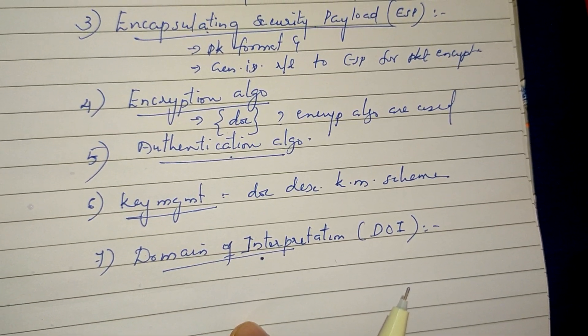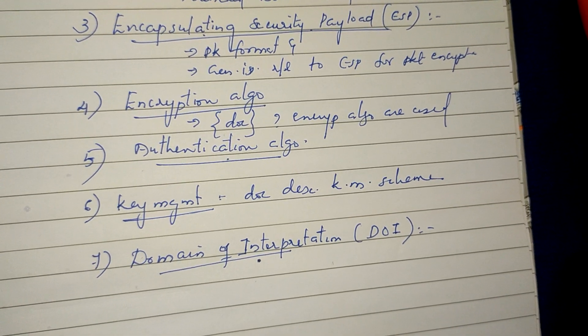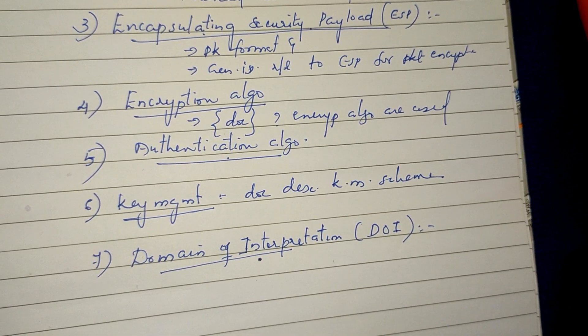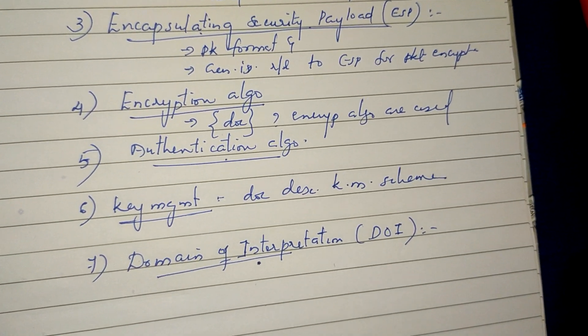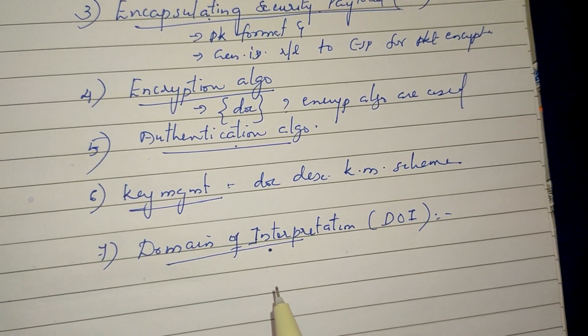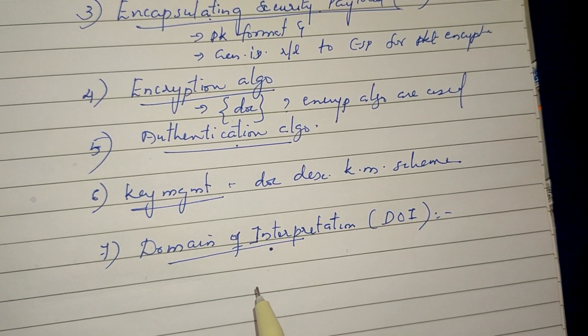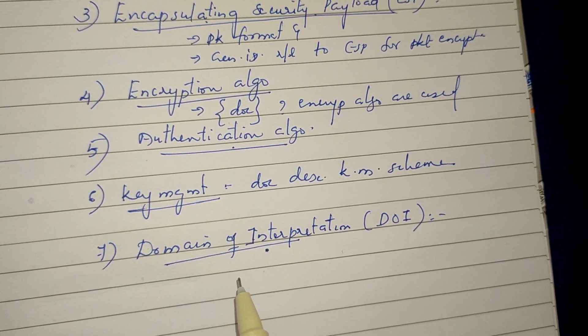The Domain of Interpretation contains identifiers for the encryption approach and authentication algorithms — essentially providing identifiers that link the other document groups together.